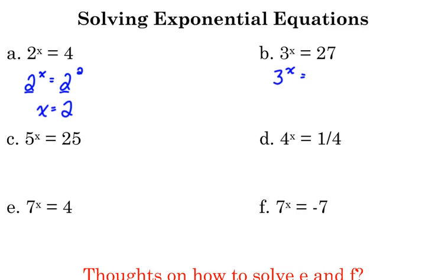I can rewrite 27 as 3 cubed, so same base, their exponents must be the same. Same thing with 25. I can rewrite that as 5 squared, so that means x must be 2.